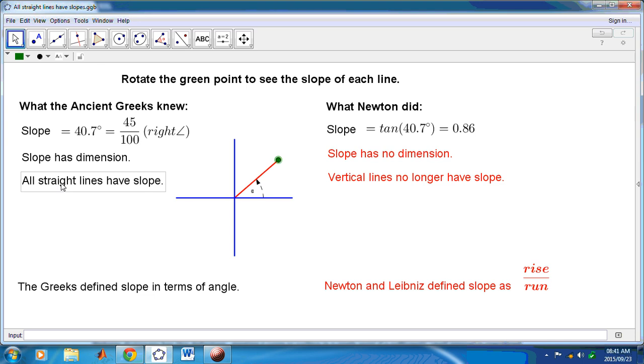In ancient Greece, all straight lines have slope. Even vertical lines have slope. See? That has a slope of one right angle or 90 degrees. That has a slope of 270 degrees or three right angles.